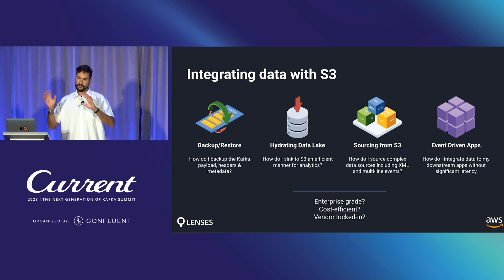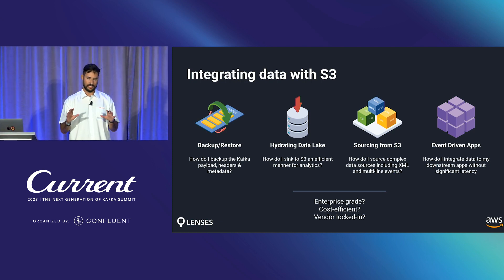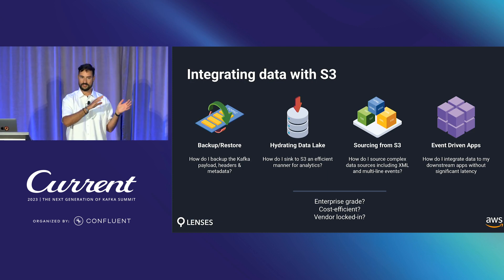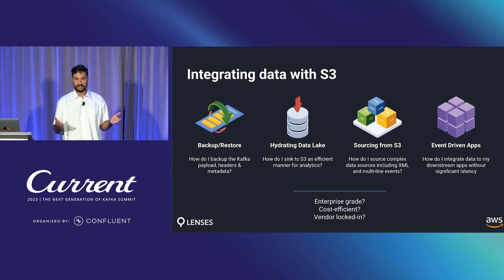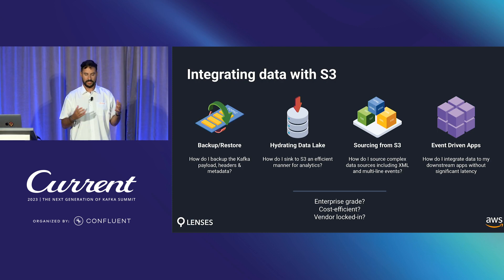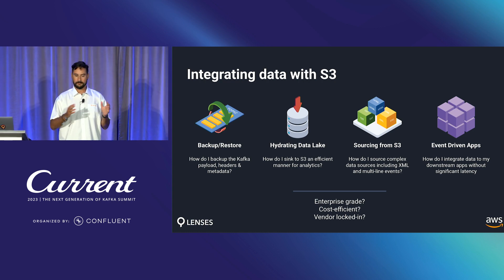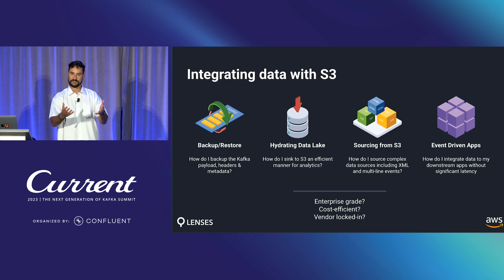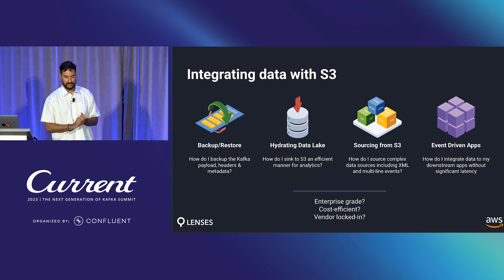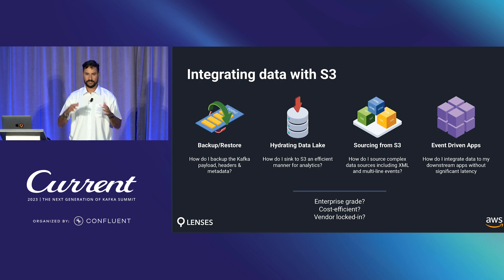We also have two patterns around integrating systems and apps that are not native to Kafka. On one side, you might be sourcing data from systems to Kafka through S3 — maybe because they're legacy and it's too hard to build a native integration directly as a producer, or because it's an external or very rigid system. Teams and departments will export files to an S3 bucket, and then you need to bring that into Kafka. More often than not, those files may be XML, custom formats, proprietary, or multi-line.